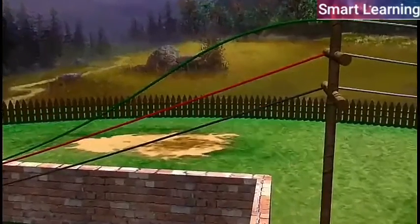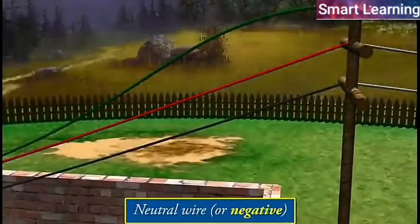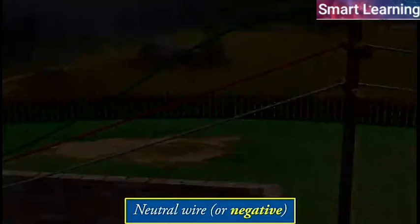One of the wires in this supply, usually with red insulation cover, is called live wire or positive. Another wire with black insulation is called neutral wire or negative.